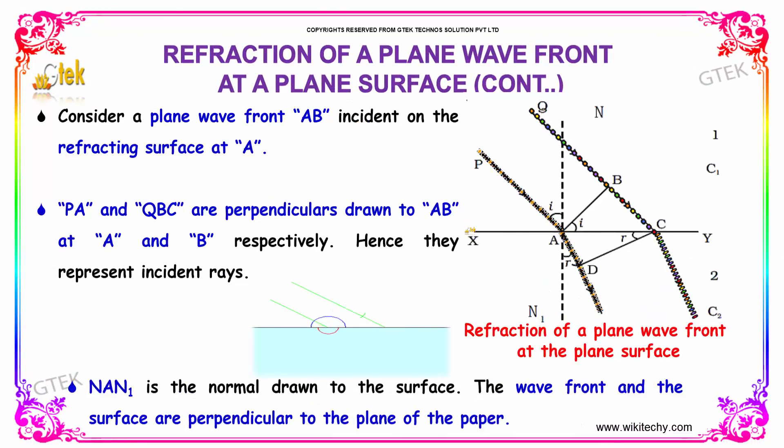Consider a plane wave front AB incident on the refracting surface at A. PA and QBC are perpendiculars drawn to AB at A and B respectively. Hence, they represent the incident rays.